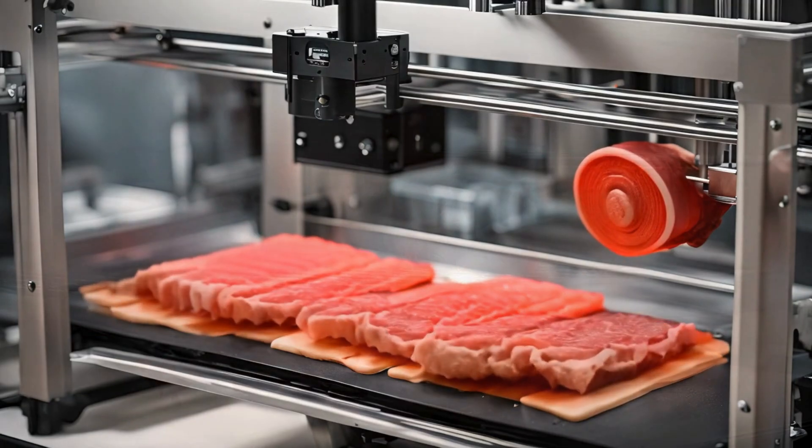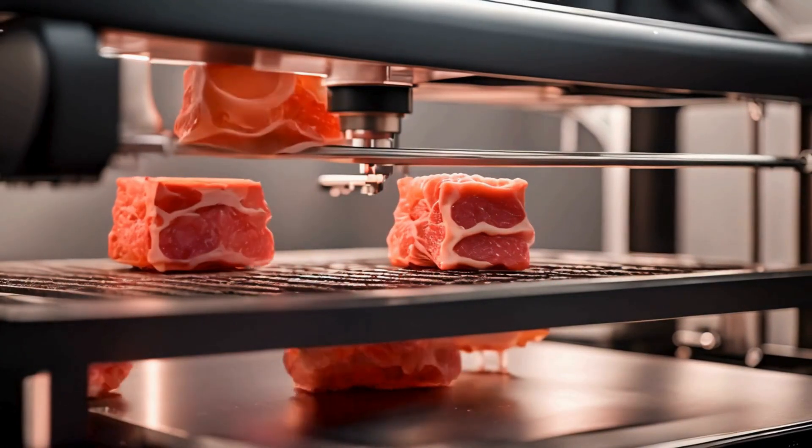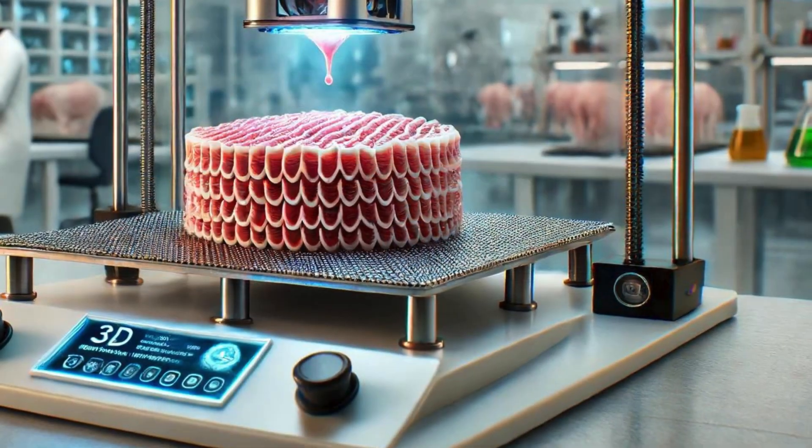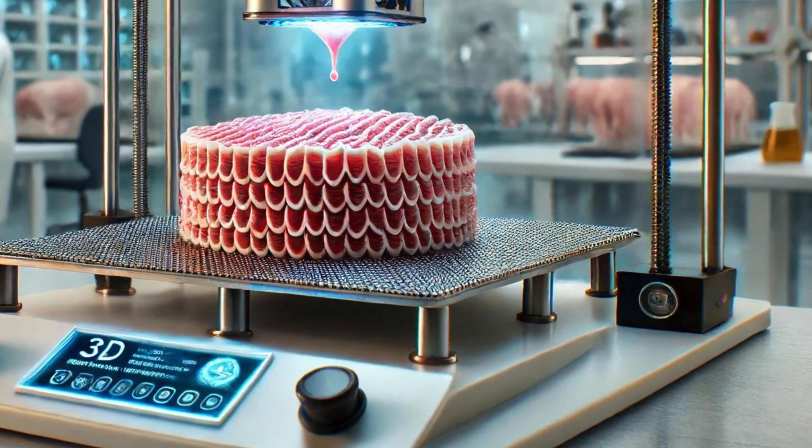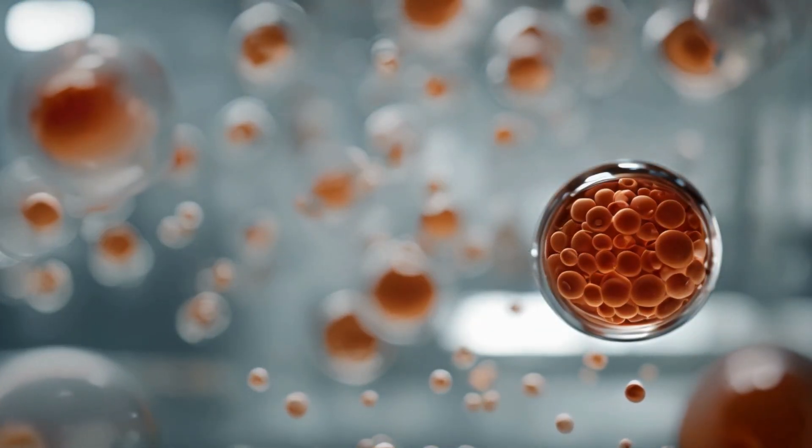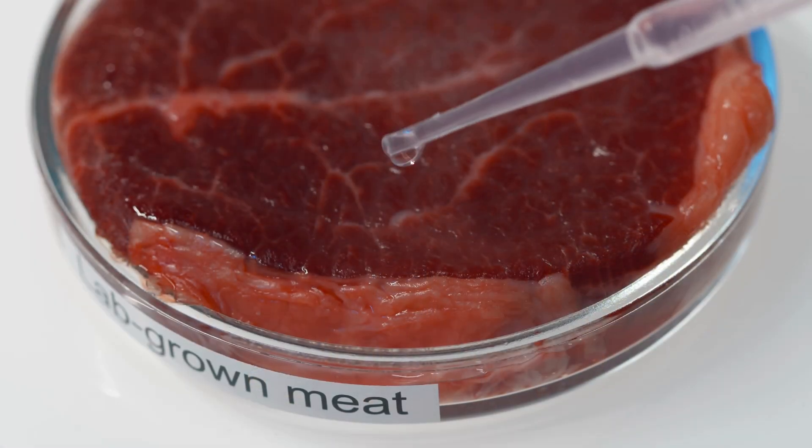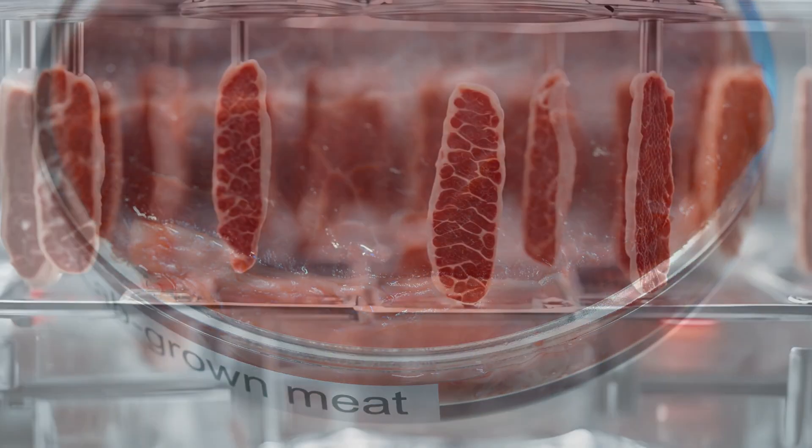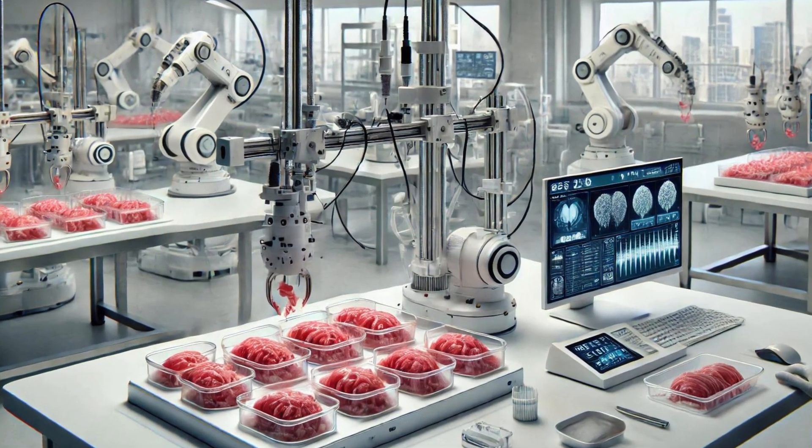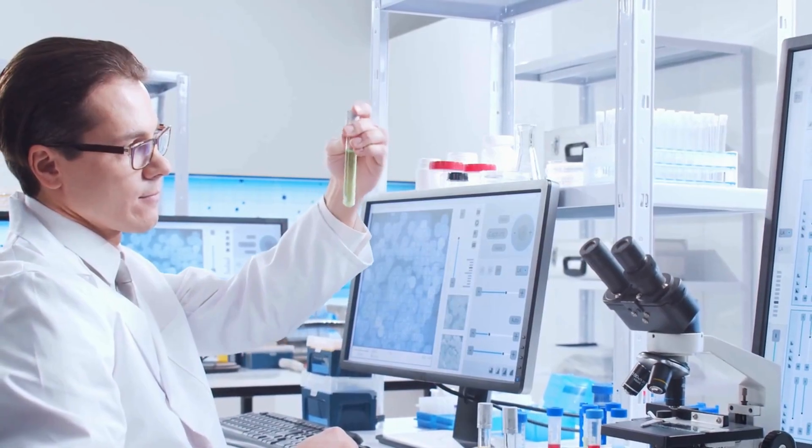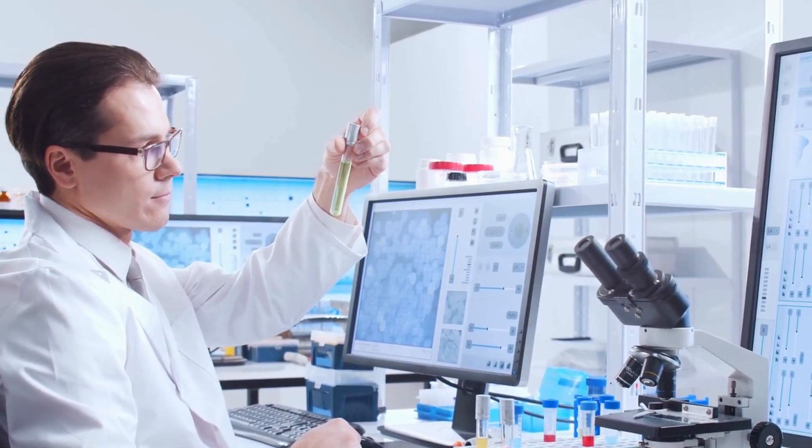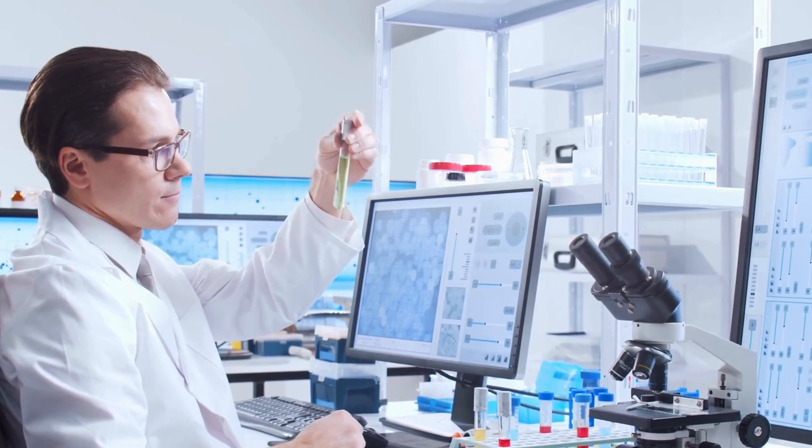Bioprinting: A specialized form of 3D printing that uses bio-ink made of living cells to create detailed meat structures, layer by layer. Micro-carriers: Tiny particles that support cell growth and help form three-dimensional tissues. Electrical and mechanical stimulation: These techniques help cells mature into muscle tissue by mimicking the natural environment of animal muscles.